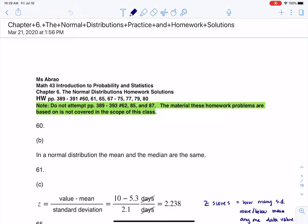Hey Math43, I had a question coming out of chapter 6, number 60. Here we were told that patient recovery time for some kind of surgical procedure was normally distributed with a mean of 5.3 days and a standard deviation of 2.1 days.